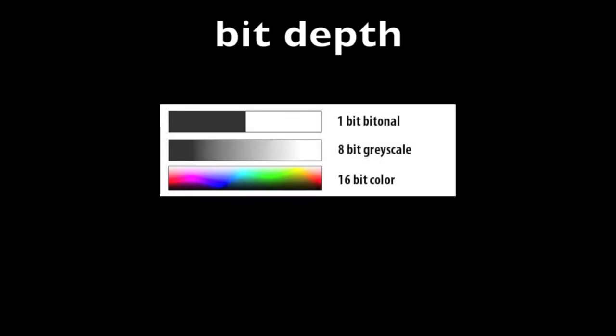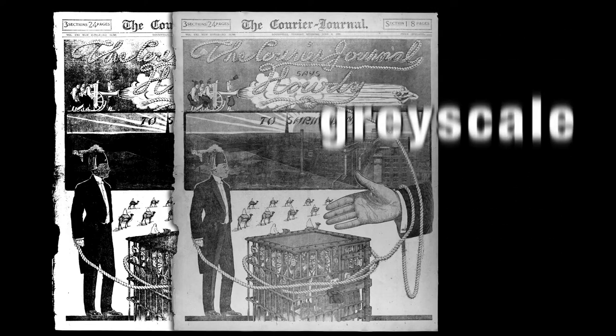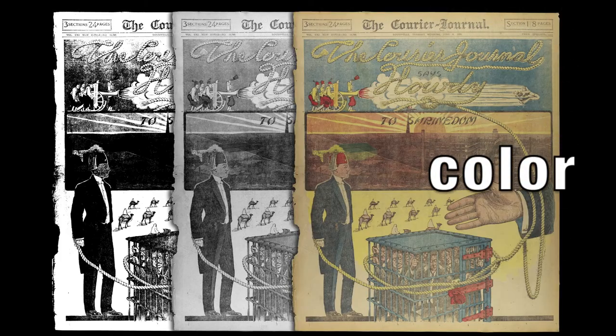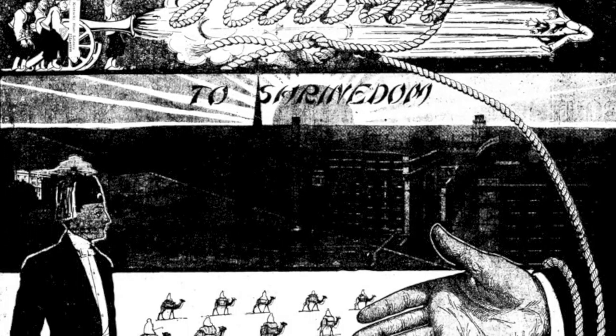Bit depth refers to the number of unique colors or bits used to indicate the color of a pixel in an image. There are three basic types: bitonal, grayscale, and color. Bitonal images are considered one bit — a pixel is represented as either being black or white. Because of this, bitonals have a small file size, making them quicker to scan and transfer, and they take up less storage.